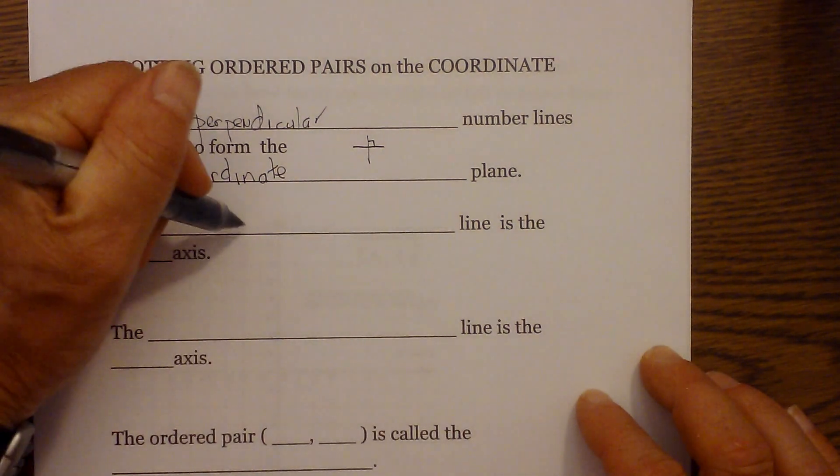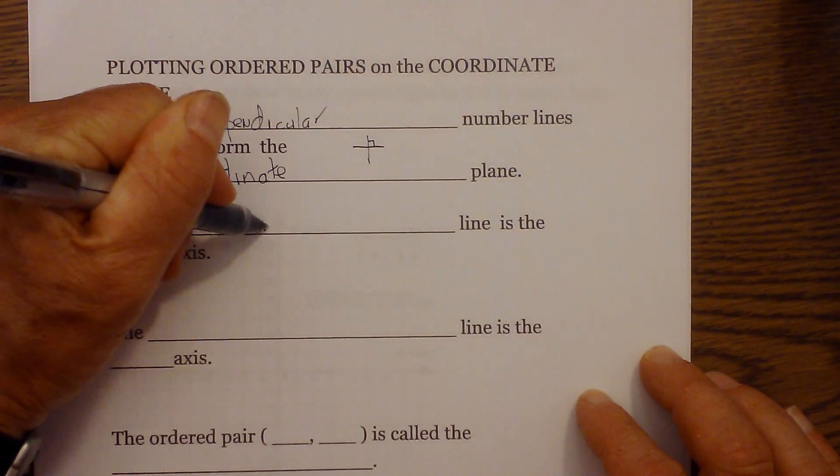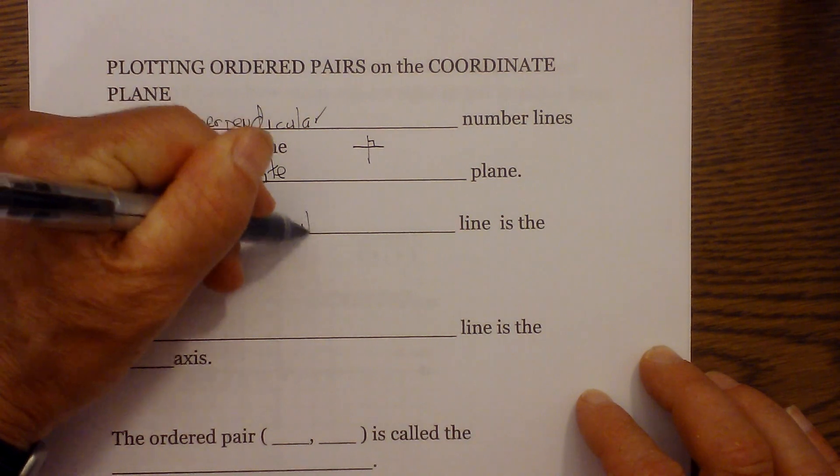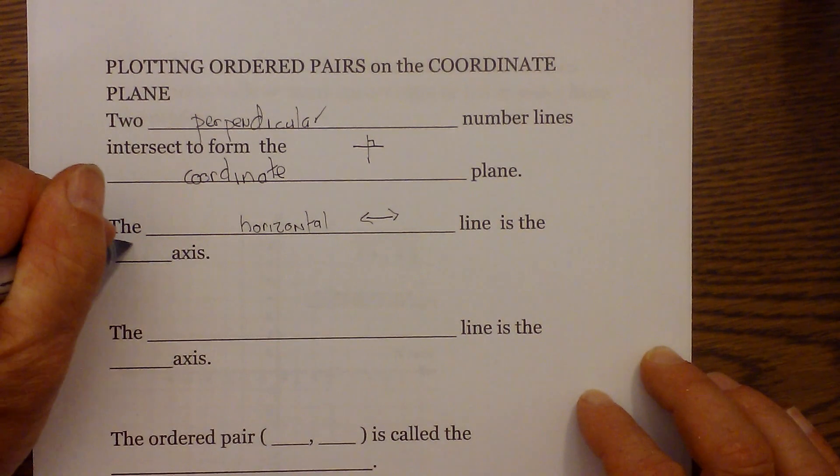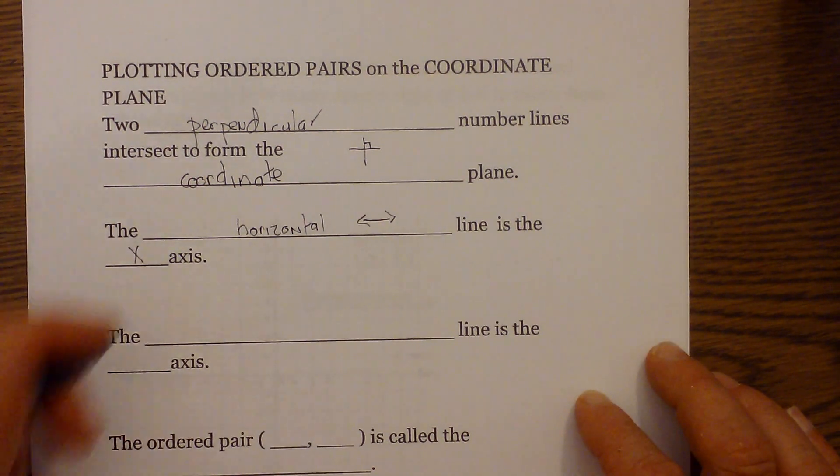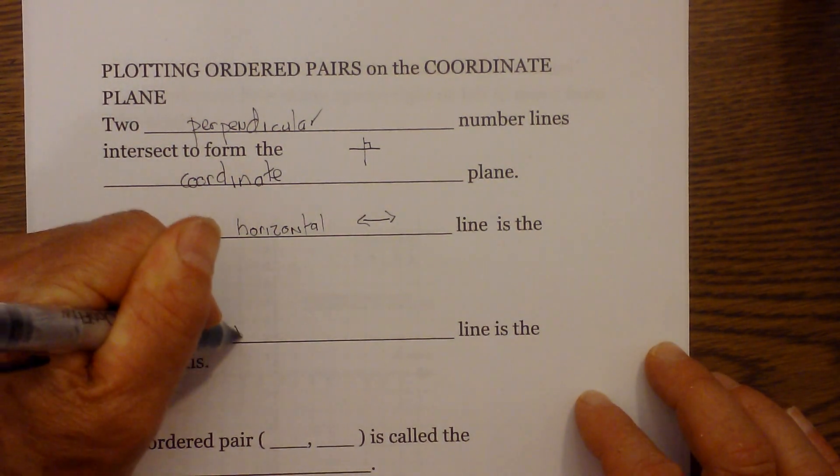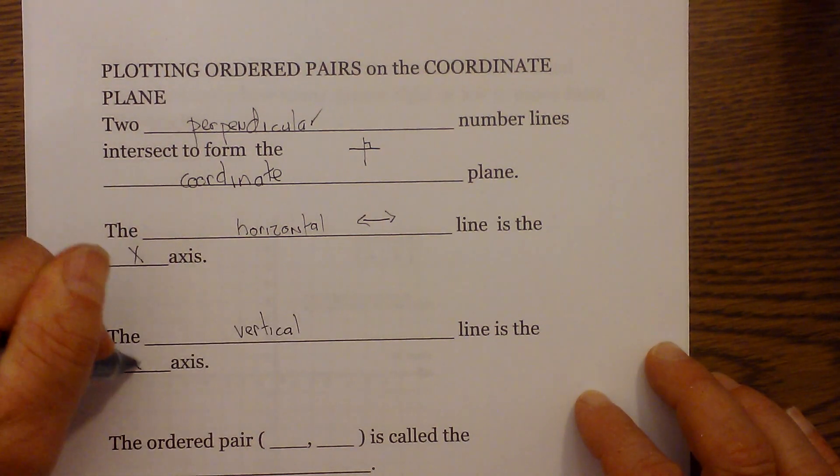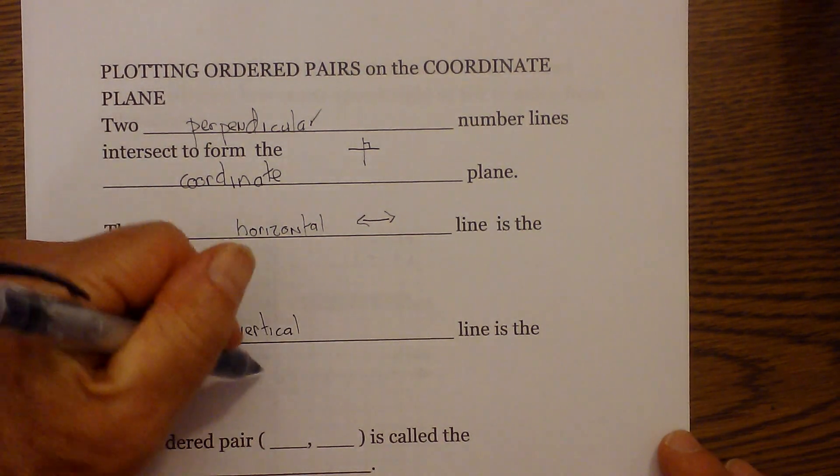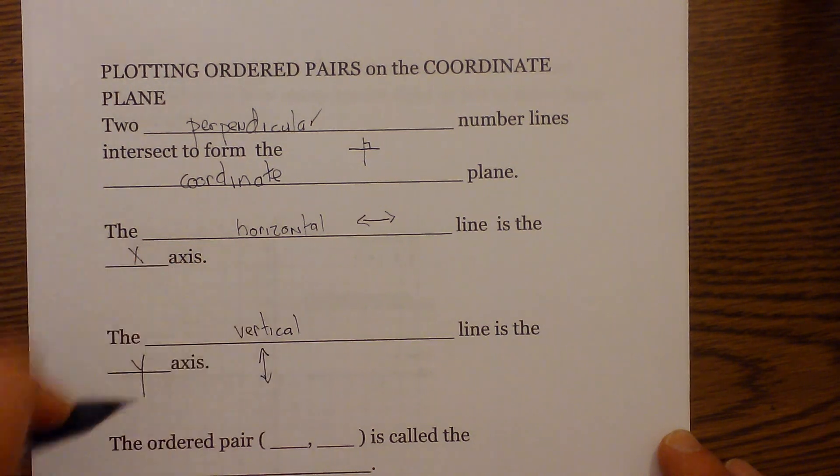Next, the horizontal line is the x-axis, and then the vertical line is the y-axis. A vertical line would go up and down.